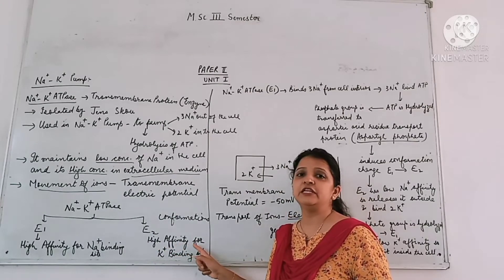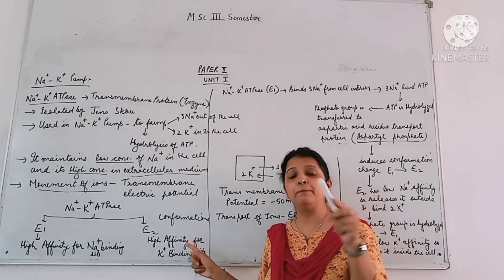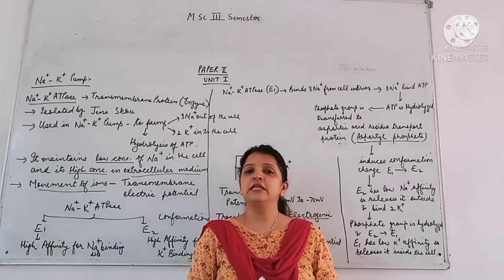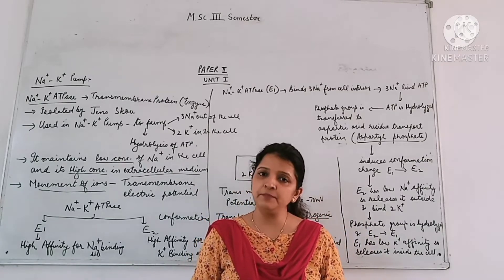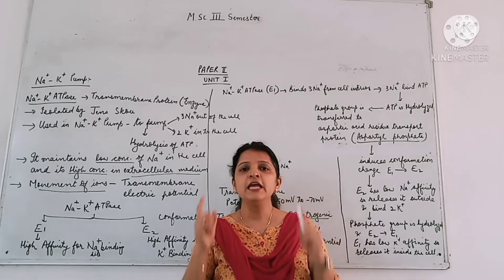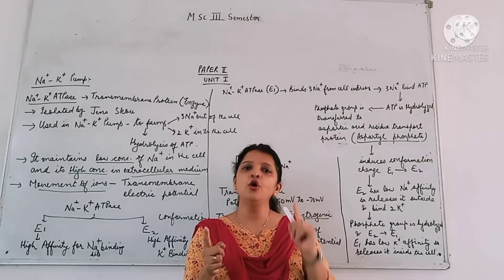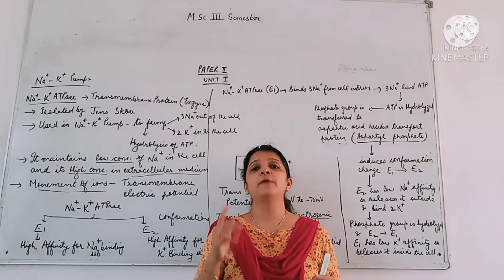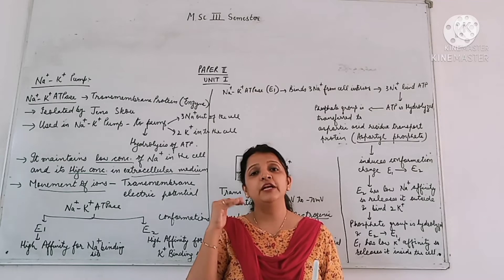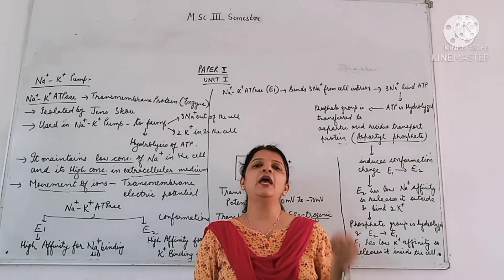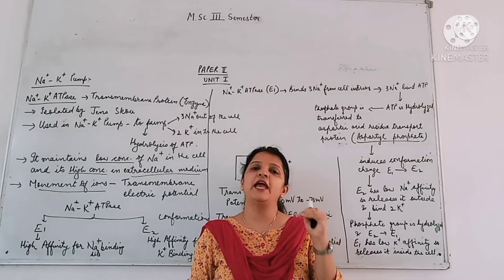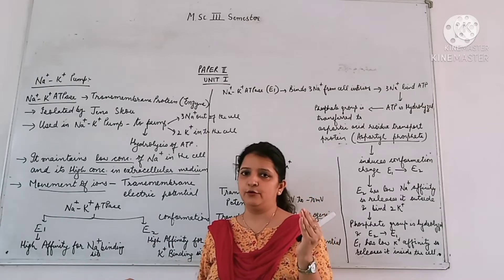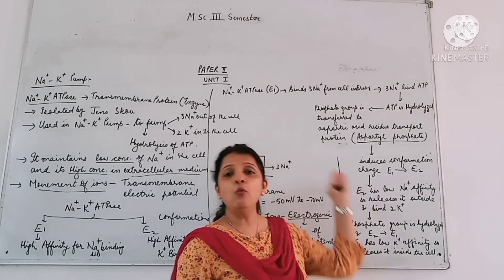Remember that the enzyme called Na+ K+ ATPase has 2 conformations: E1 and E2. E1 conformation has high affinity for Na+, and E2 conformation has high affinity for K+. Now, what is the mechanism? How does this pump move Na+ and K+ into and out of the cell?